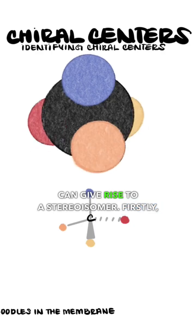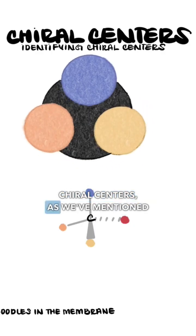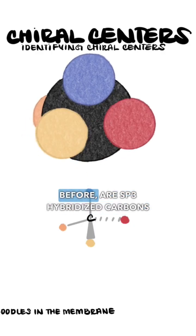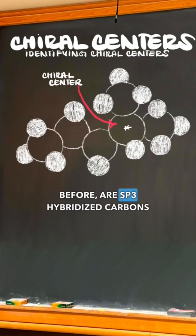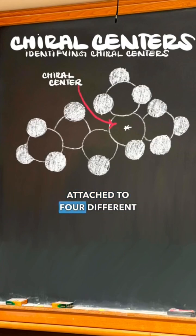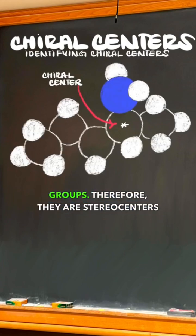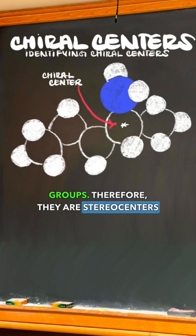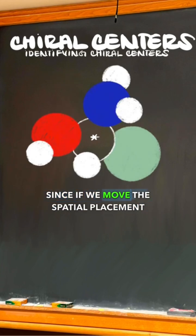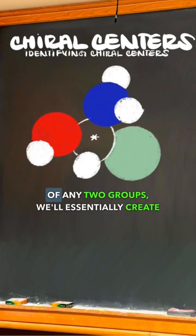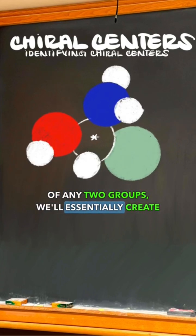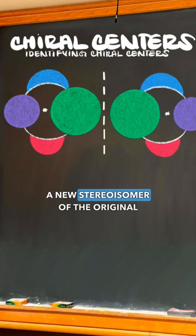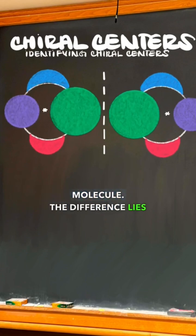Firstly, chiral centers, as we've mentioned before, are sp3 hybridized carbons attached to four different groups. Therefore, they are stereocenters, since if we move the spatial placement of any two groups, we'll essentially create a new stereoisomer of the original molecule.